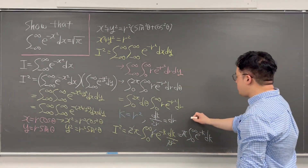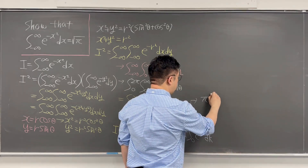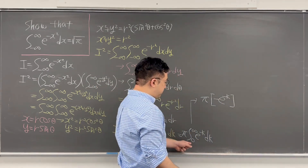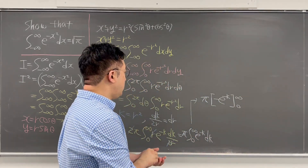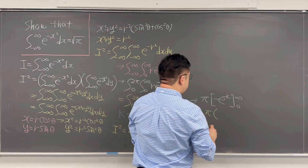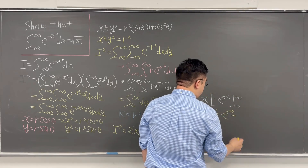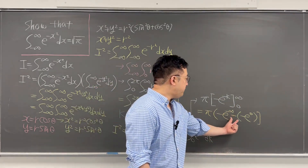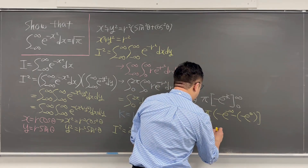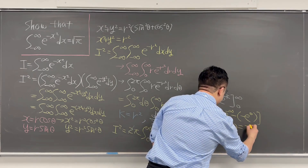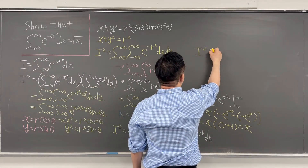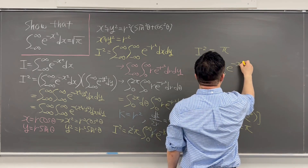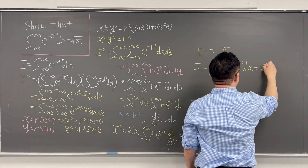Working this out, the antiderivative of e to the power of negative k is negative e to the power of negative k, evaluated from 0 to infinity. This gives pi times the quantity: negative e to the power of negative infinity, minus negative e to the power of 0. Now, negative e to the power of negative infinity equals 0, and negative negative e to the power of 0 equals 1. So this is pi times 0 plus 1, which equals pi. Therefore, I squared equals pi, which means I — the integral from negative infinity to infinity of e to the power of negative x squared dx — equals the square root of pi.